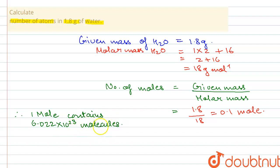This is the number of molecules. A molecule means a water molecule, but in this question they are asking us for the number of atoms. In a water molecule, we have two hydrogen atoms and one oxygen atom, which